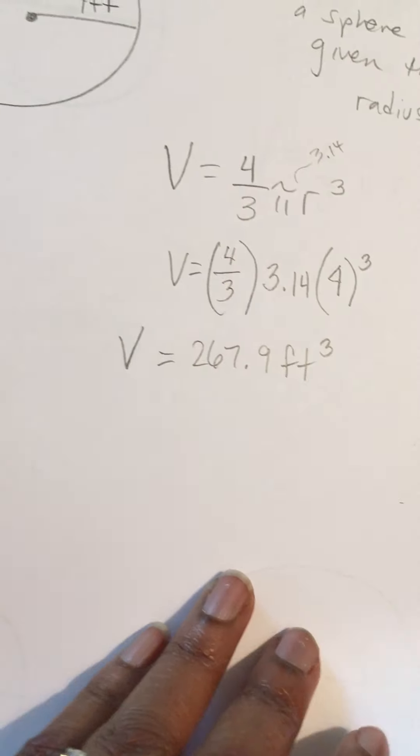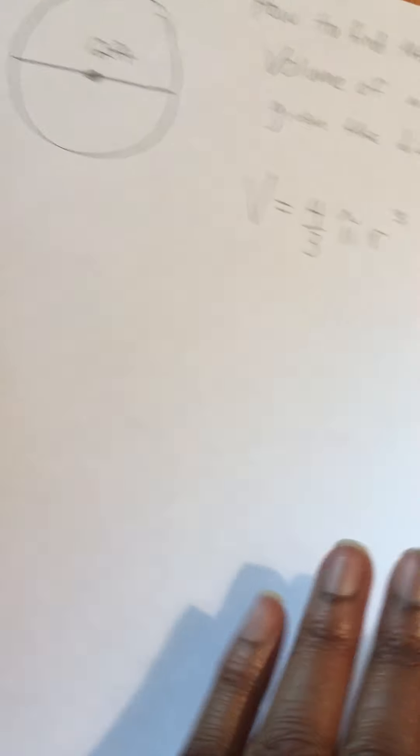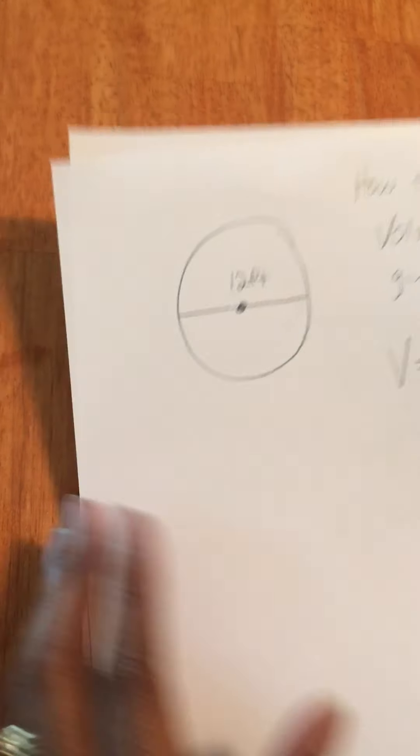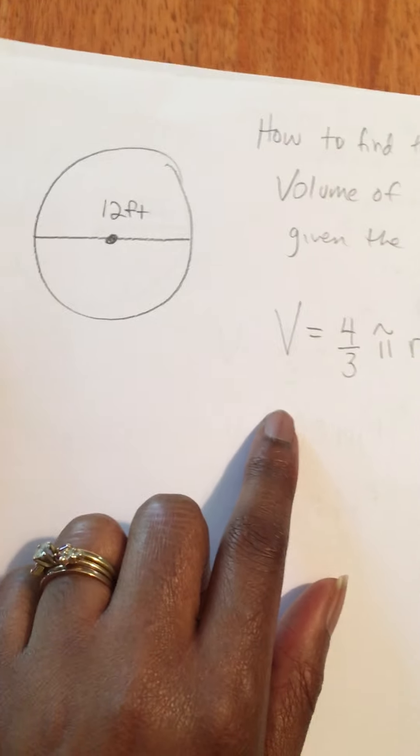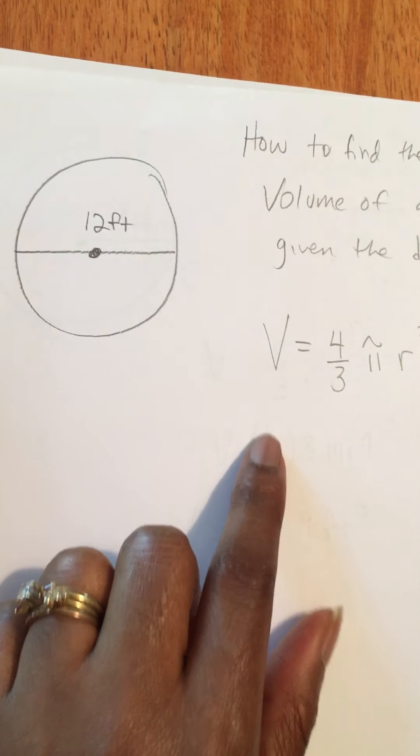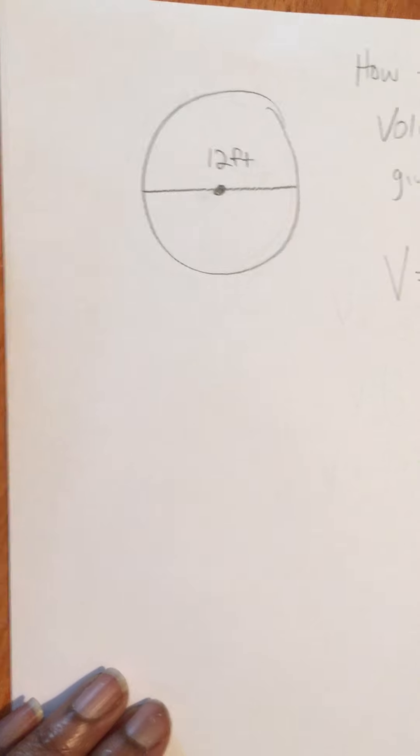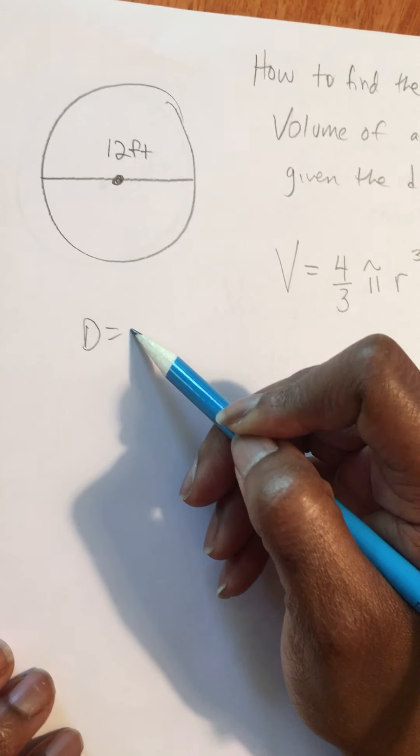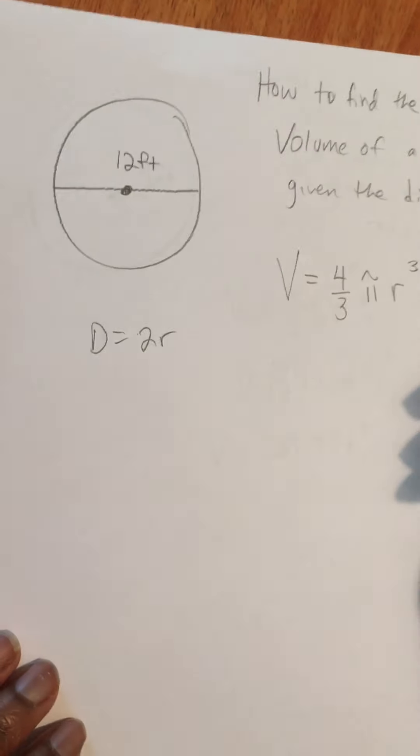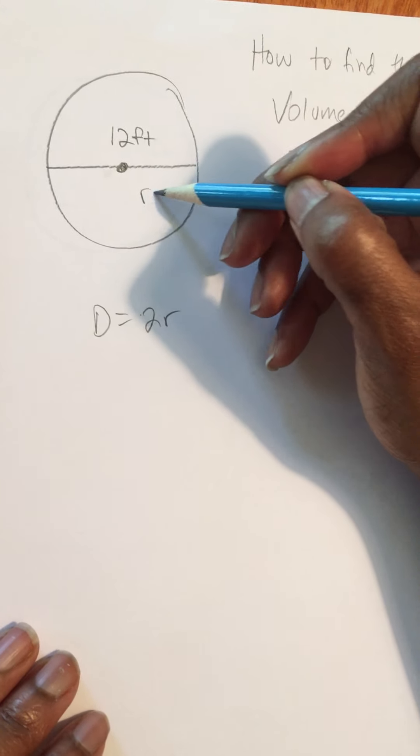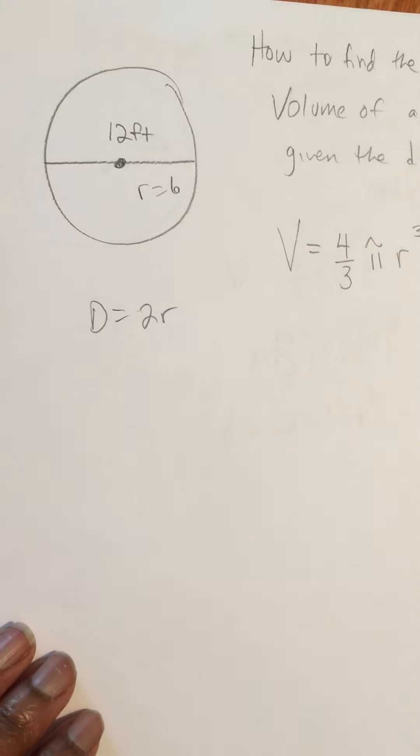I got one more quick video on here. There's our final answer there, so you see it. The next one is going to be how to find the volume of a sphere given the diameter. We have the exact same equation, but diameter is simply the radius times 2. So if the whole diameter is 12 feet here, that means my radius is half of that, which is 6 feet.